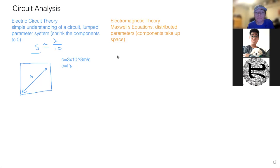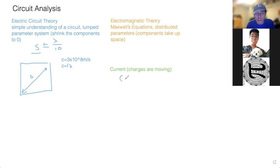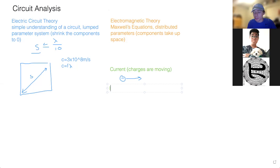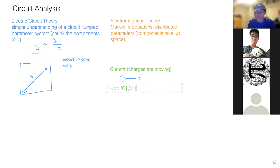Now I'm going to talk about the basics. You need to know what current is. Current basically means charges are moving. Think of an electron moving to the right — that's current. It's how much charge is moving per unit time. The equation for current is I equals dq/dt, where charge q is measured in Coulombs and time is in seconds. That's how we define current: the amount of charges moving per unit time.